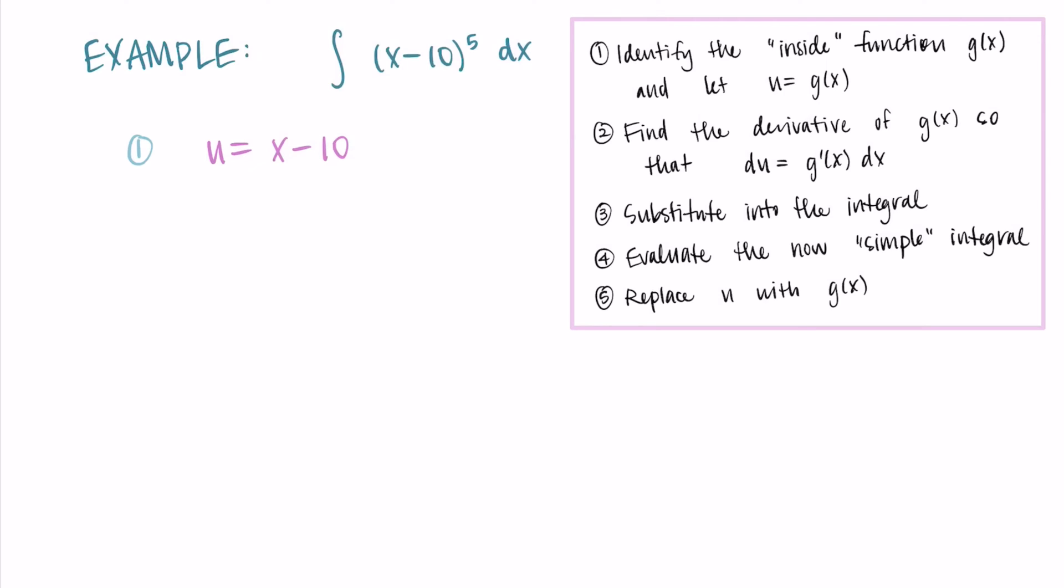Then I want to find the derivative of this u. So the derivative of x-10 is just one. And so I'm getting that du is equal to one times dx. That's my step two.